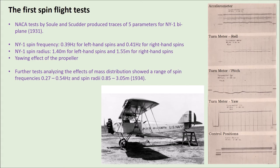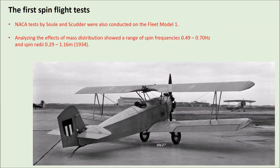They also conducted further tests looking at how changing the mass distribution of the aircraft changed spin characteristics, by moving buckets of lead shot forwards and backwards within the fuselage — pure experimental style. They found that spin frequencies varied between 0.27 and 0.54 Hz, and spin radii changed somewhere between 1 and 3 meters. Sol and Scudder also conducted spin tests using the Fleet Model 1, again examining how mass distribution affected spin characteristics, finding very similar spin frequencies and spin radii to their earlier work.